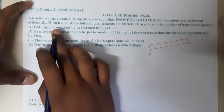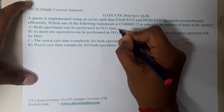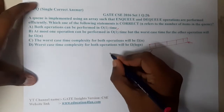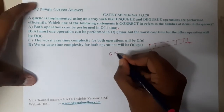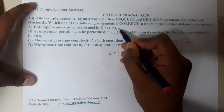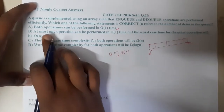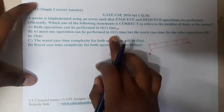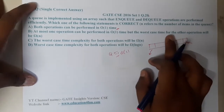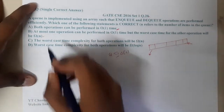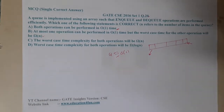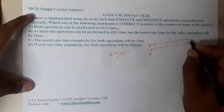The first option states that both operations can be performed in O(1) time — so basically both insertion and deletion will be at O(1). Let us cross-check that and keep that option for now. The second option states that at most one operation can be performed in O(1) time but the worst case for the other will be O(n).